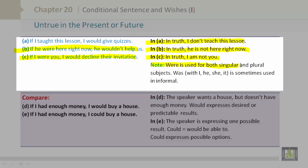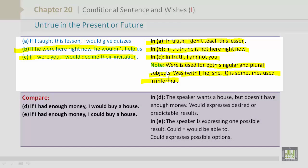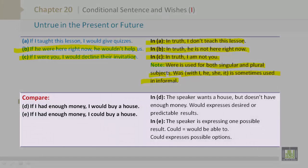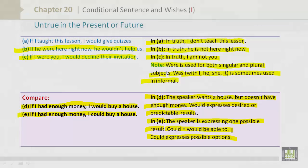Note: were is used for both singular and plural subjects. Was, with I, he, she, or it, is sometimes used informally. So let's compare. D: If I had enough money, I would buy a house. In D, the speaker wants a house but doesn't have enough money. Would expresses desired or predictable results. E: If I had enough money, I could buy a house. In E, the speaker is expressing one possible result. Could equals would be able to. Could expresses possible options.